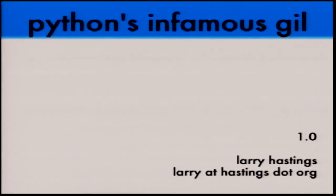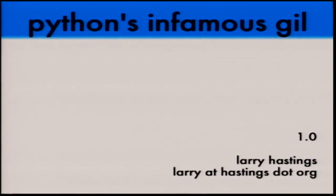I'm Larry Hastings, and this is Python's infamous GIL. I'm going to talk about what it is, what problem it's trying to solve, how it solves it, what the ramifications of those choices are, what its history is like, and what its future is like. I originally proposed this talk at a more advanced level, but the way I wrote it, it's really friendly for beginners too. So don't get scared.